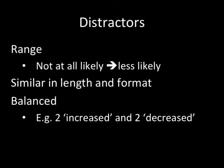Ideally, you want the distractors to range from extremely unlikely to less likely than the correct answer, because that mimics real life. When we look at a CT scan with an abnormality, there are several possibilities — some not very likely — and then one that is the most likely. You want that most likely answer to be a significant step ahead of the others in likelihood.